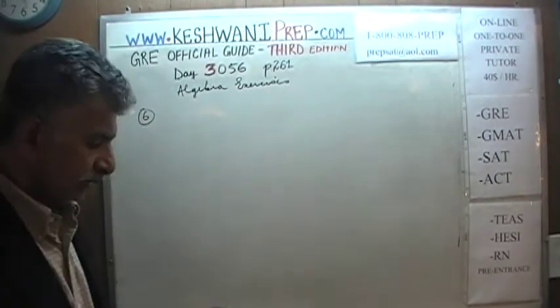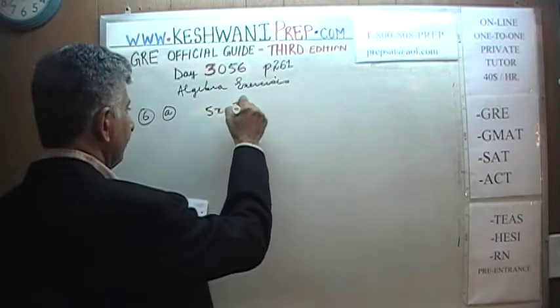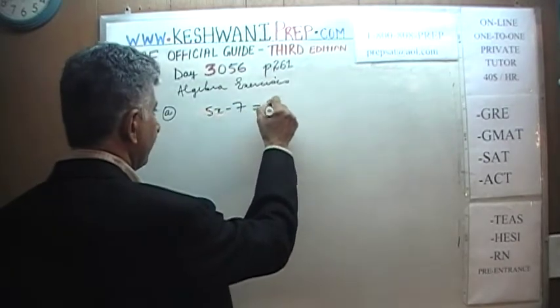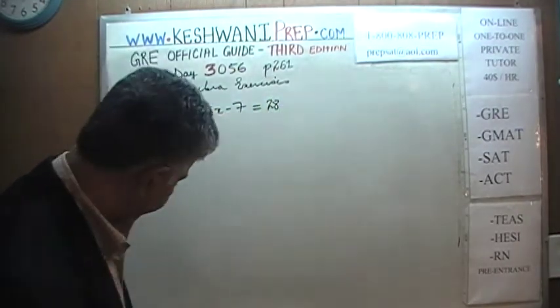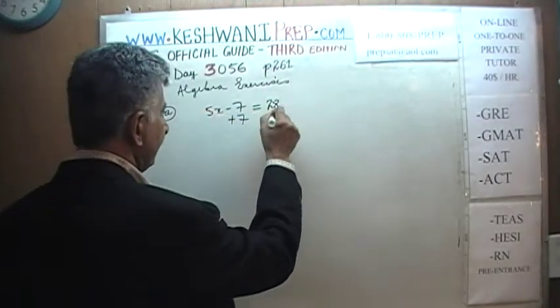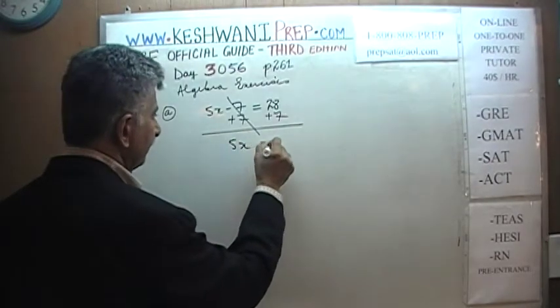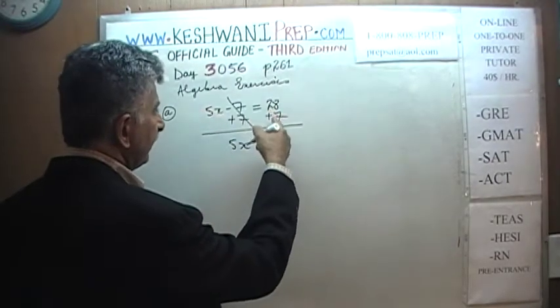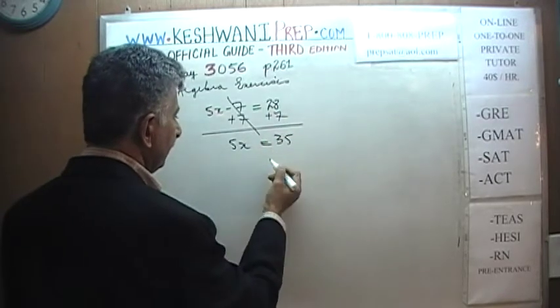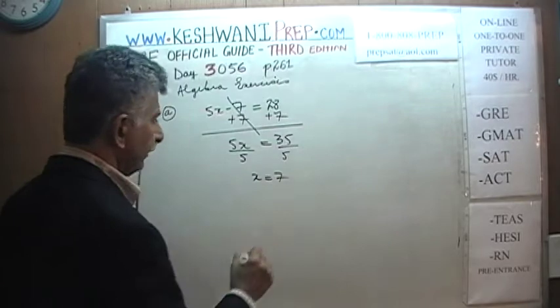It simply says: solve each of the following equations for x. The first one is a simple linear equation: 5x minus 7 equals 28. Let's bring the 7 to this side by adding 7 to both sides. The 7 cancels out and we have 5x equals 28 plus 7, which is 35. Divide both sides by 5 and x equals 7.